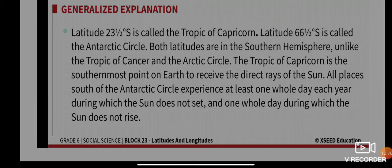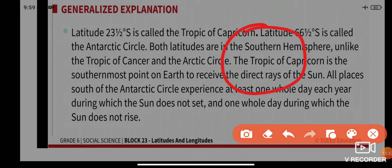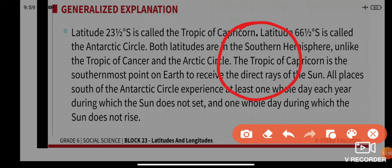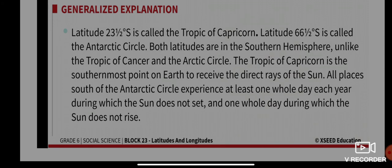Places south of the Antarctic Circle experience one whole day during which the sun does not set and one whole day during which the sun does not rise — meaning the southernmost point of the southern hemisphere experiences one whole day with sunlight and one whole day without sunlight.